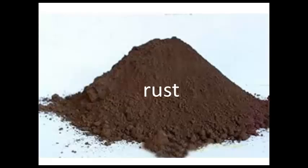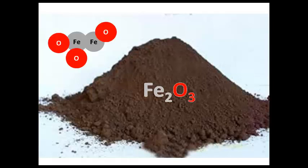We usually call this substance rust. The formula for rust is Fe2O3. That tells us that in one molecule of Fe2O3, we have two Fe atoms and three O atoms and they are bonded together to make a molecule.